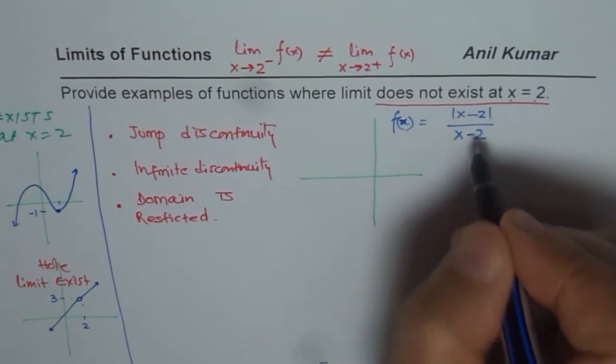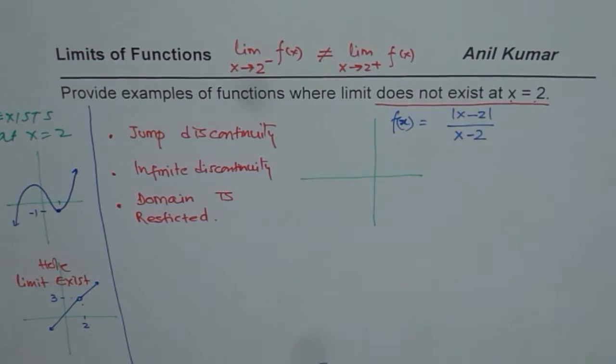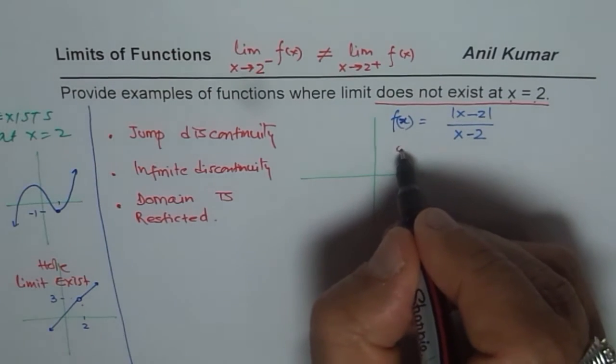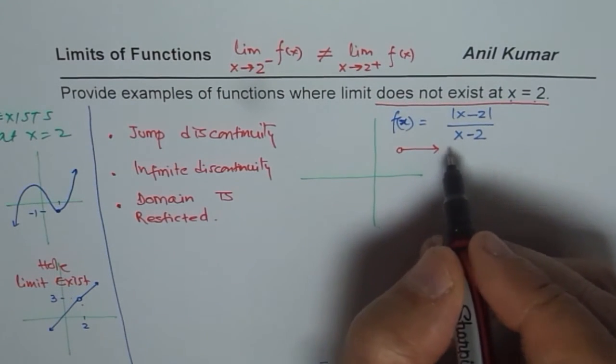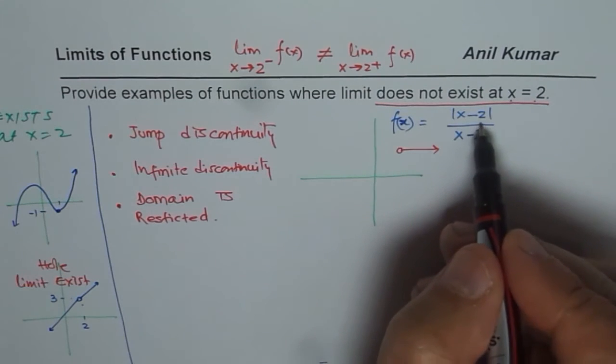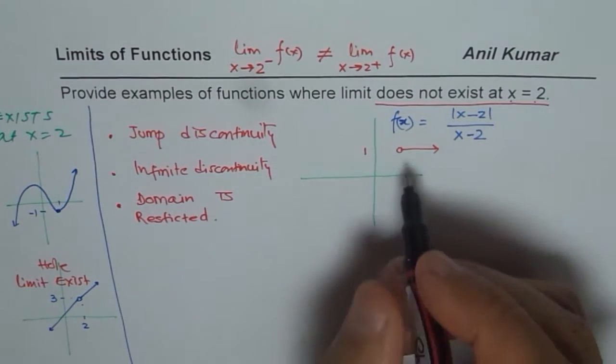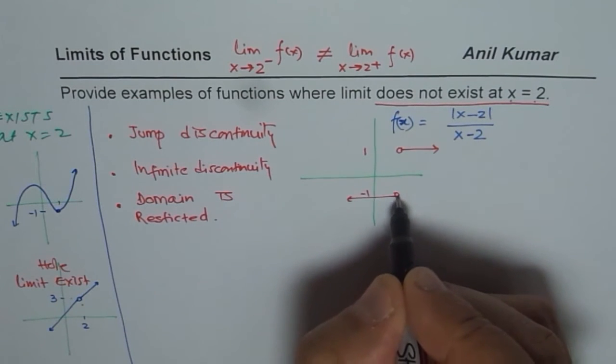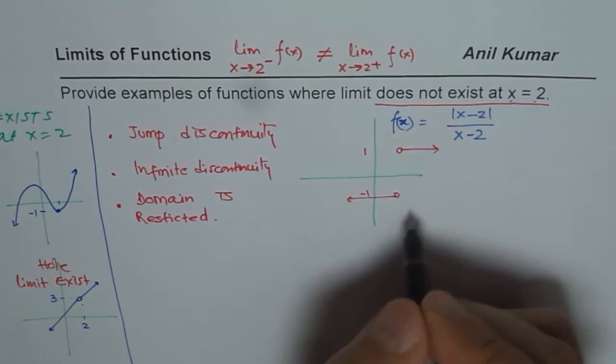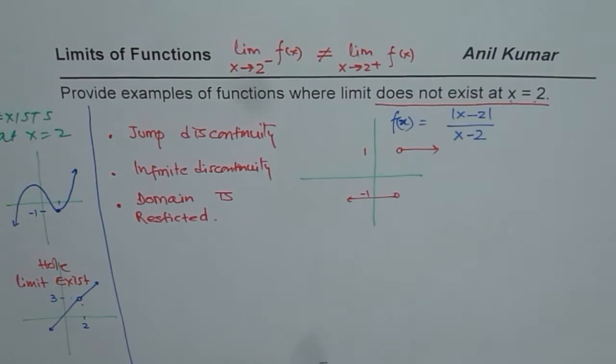Now if you sketch this particular function, what do you get? At 2 there is a jump discontinuity. Whenever it is greater than 2, it will be plus 1. When it is less than 2, it is going to be minus 1. You can see this is the jump discontinuity and the limit does not exist.